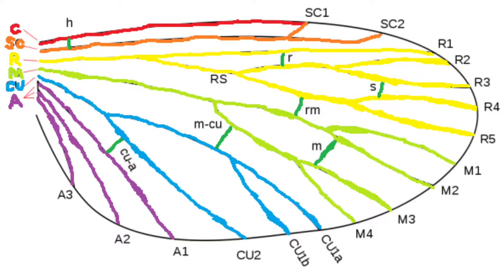The costa is red. The subcosta and both of its branches are orange. The radius and all of its branches are yellow. The media and all of its branches are light green. The cubitus and all of its branches are light blue. The anal veins are purple. And the cross veins are dark green.